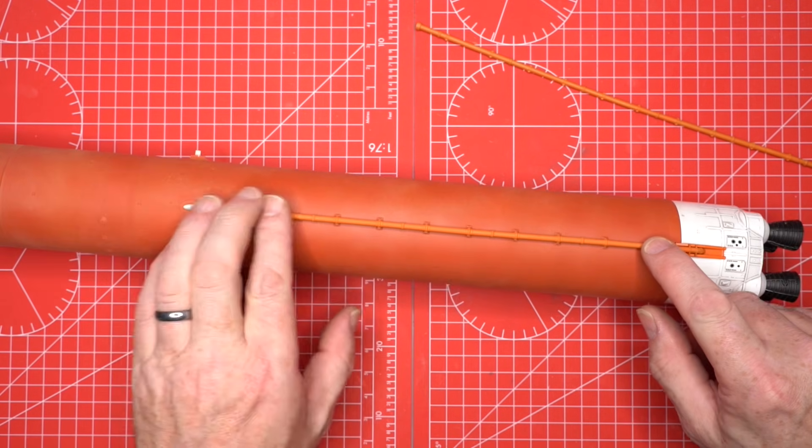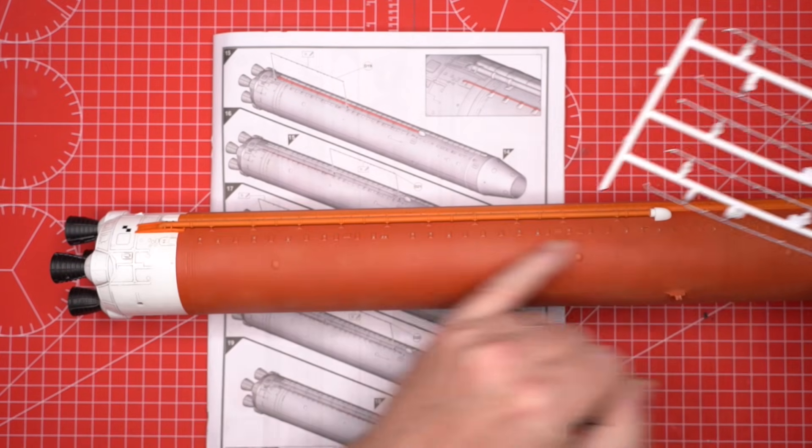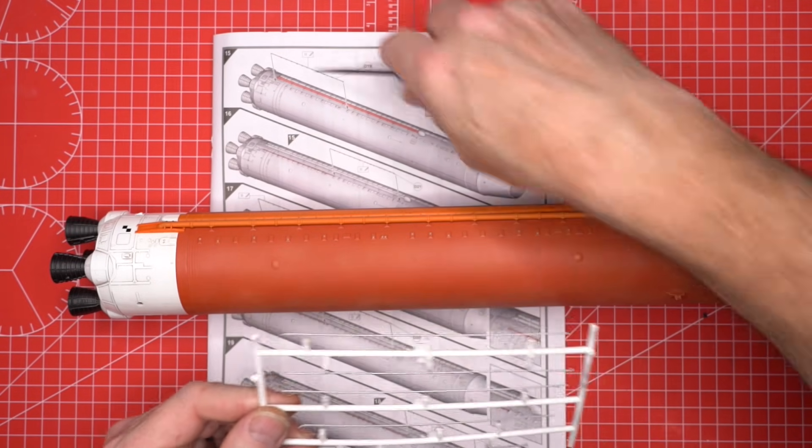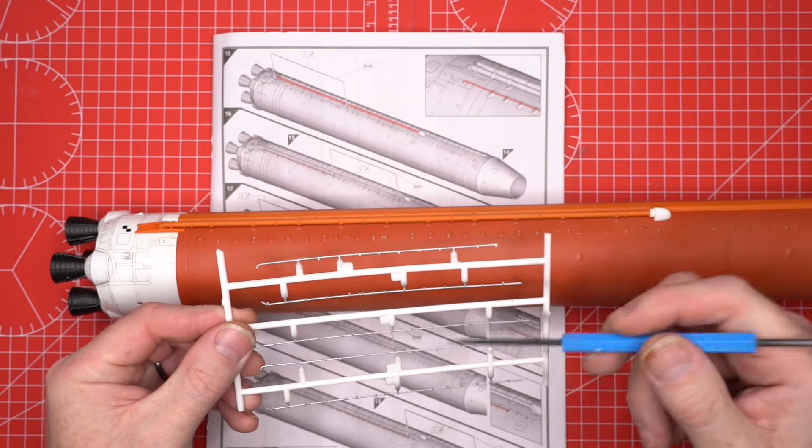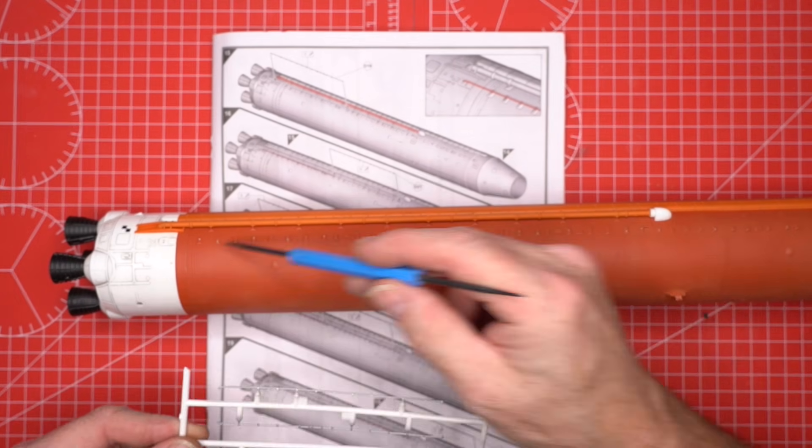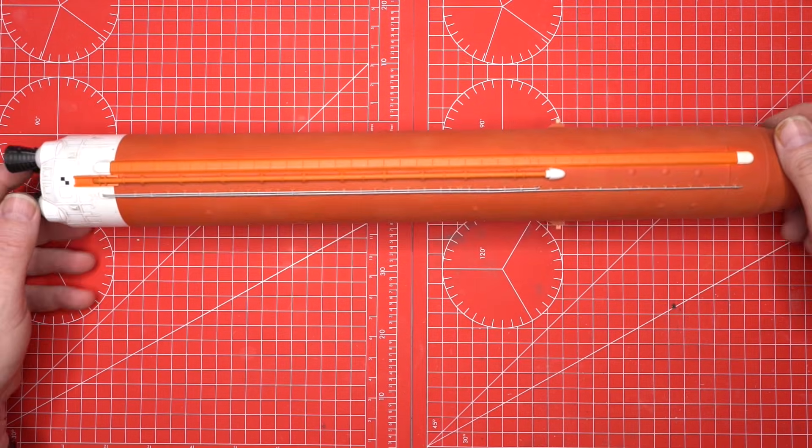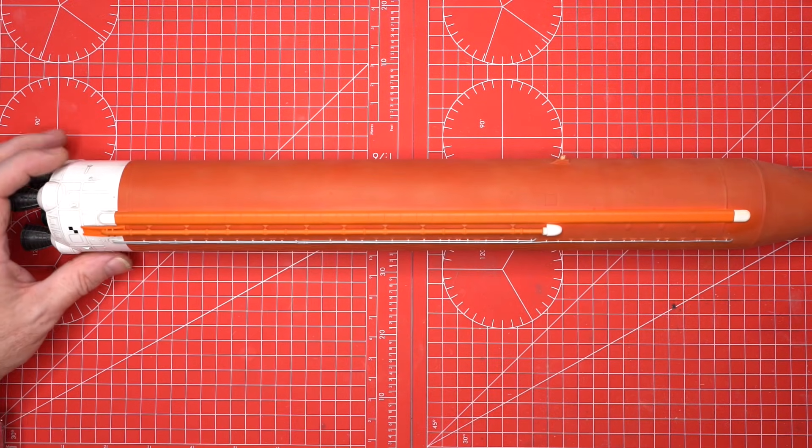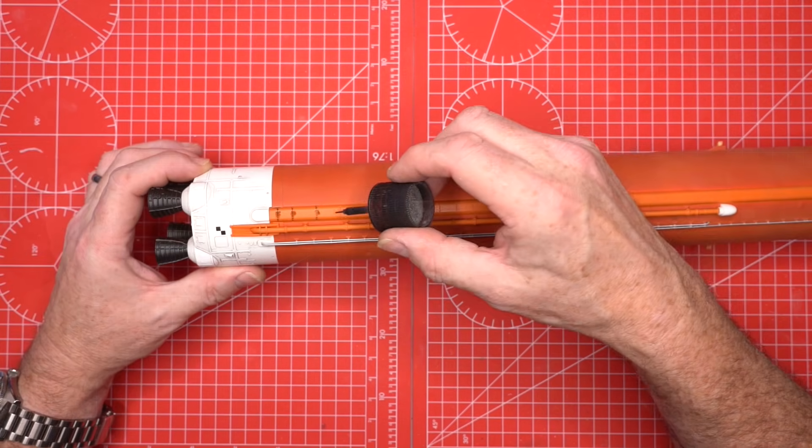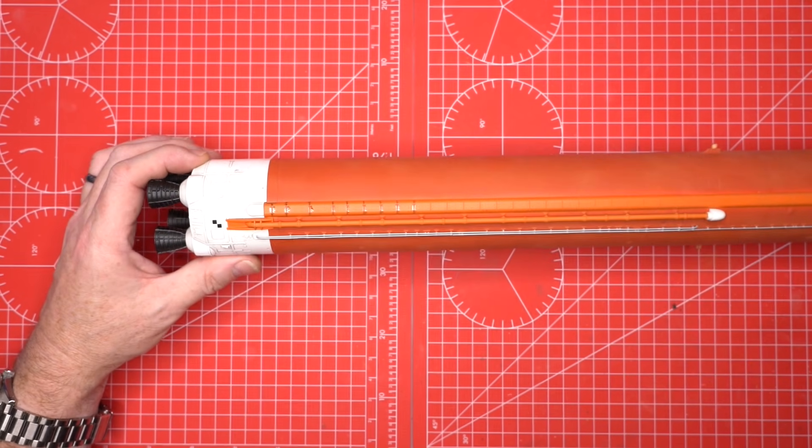The white end caps remain unpainted—the raw plastic color is already correct. Next, we bring in the railings. We paint them on the sprue first, so they're easier to handle. Once dry, we remove them and attach them up the length of the core stage. Each one locks into a precise mounting point, adding real structural flavor to the build. Finally, we run a panel line accent into the recesses, introducing subtle contrast across the surface.